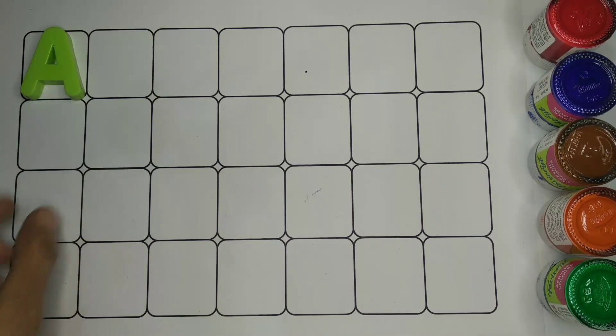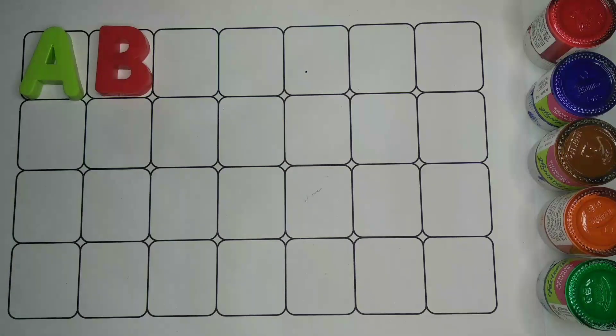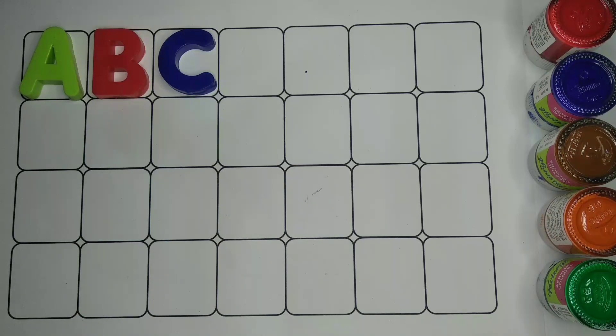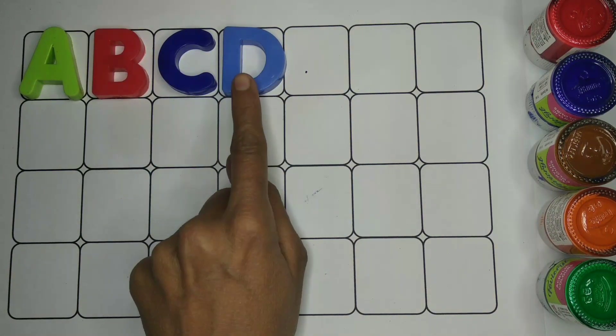A, A for aeroplane. B, B for ball. C, C for cat. D, D for doll.